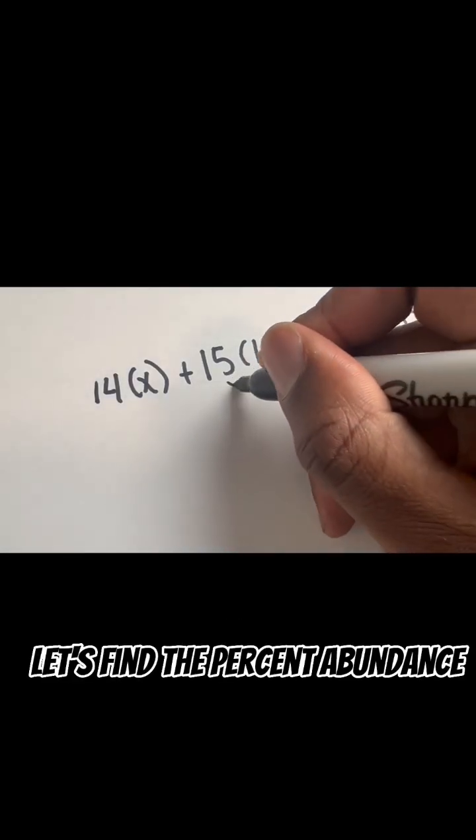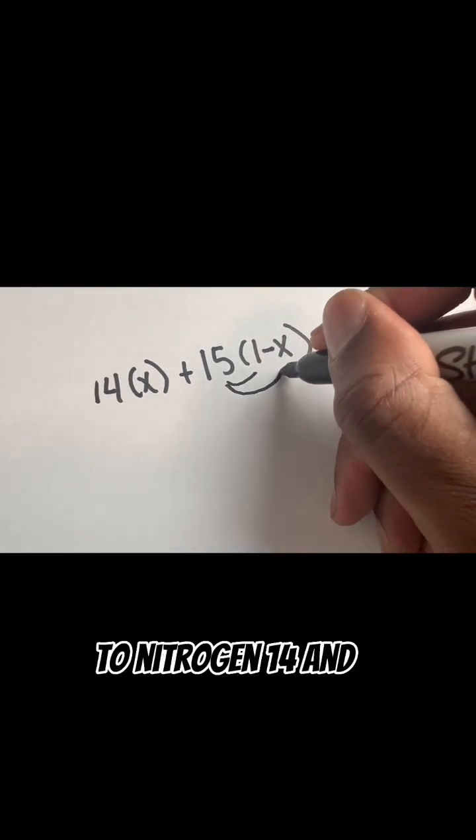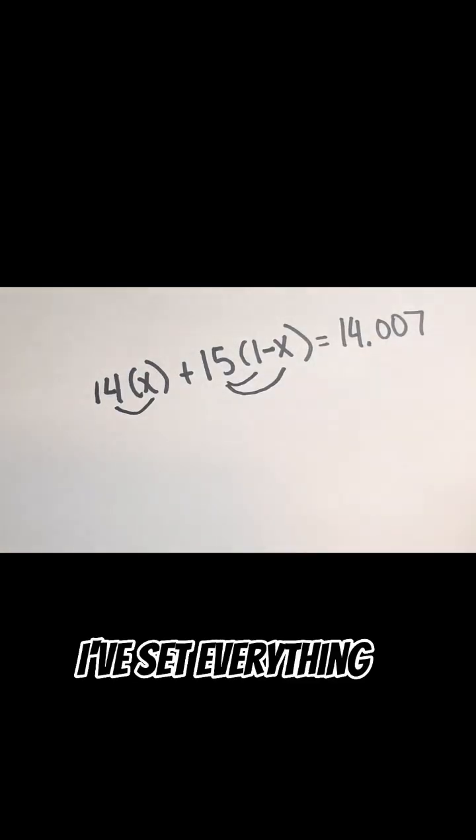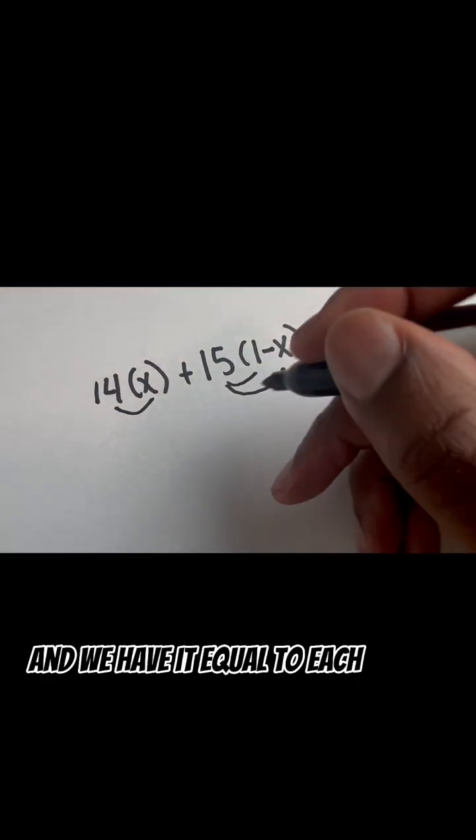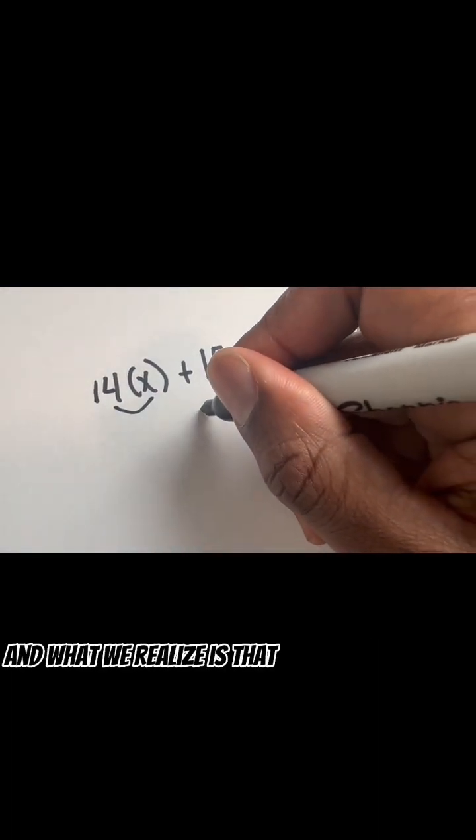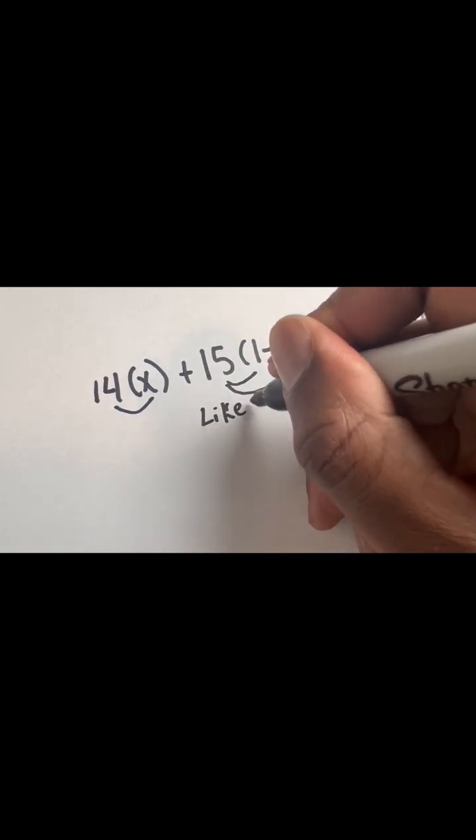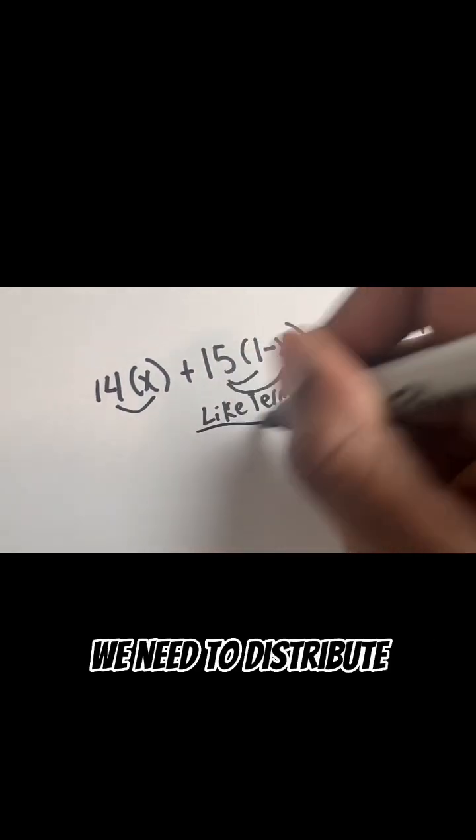Let's find the percent abundance of nitrogen-14 and nitrogen-15. I've set everything up and we have it equal to each other. What we realize is that we need to combine like terms, so we need to distribute.